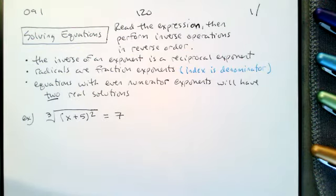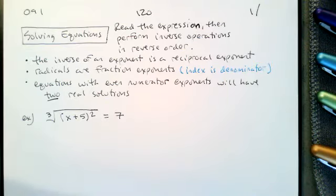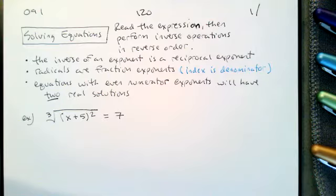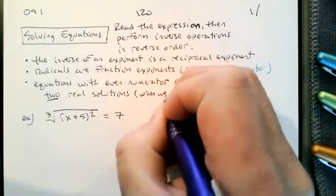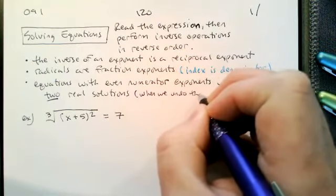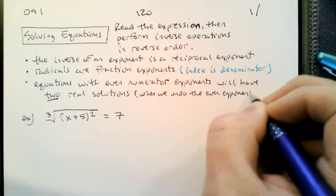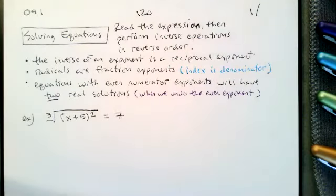It's not the square roots and fourth roots in the equation — it's when we use those. The two solutions show up when we undo an even exponent; that's when we split into two solutions.